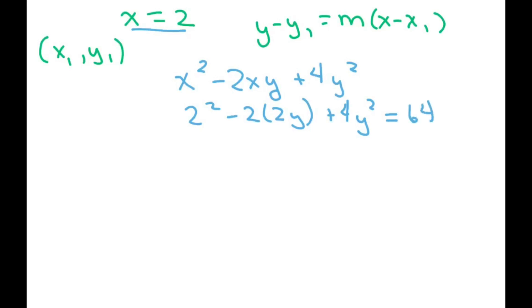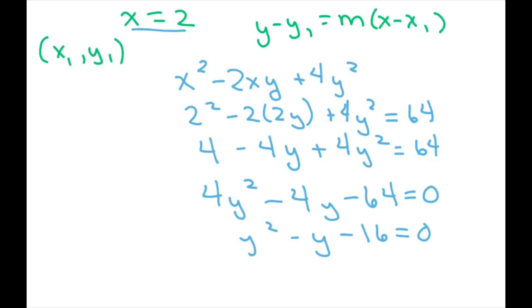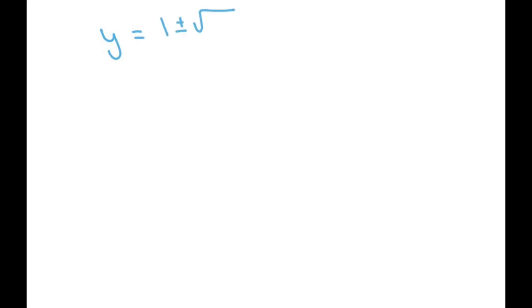Simplifying: 4 minus 4y plus 4y squared equals 64. Rearranging: 4y squared minus 4y minus 60 equals 0. Dividing everything by 4, we get y squared minus y minus 16 equals 0. Using the quadratic formula, y equals (1 plus or minus the square root of 61) divided by 2, which gives approximately y ≈ 4.41 and y ≈ negative 3.41.